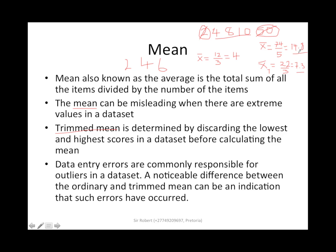You can compare now — this is the ordinary mean versus the trimmed mean. There is a big difference between the two. Data entry errors are commonly responsible for outliers in a data set. A noticeable difference between the ordinary and the trimmed mean can be an indication that such errors have occurred. So when there's a difference, you have to go back and cross-check your data set.